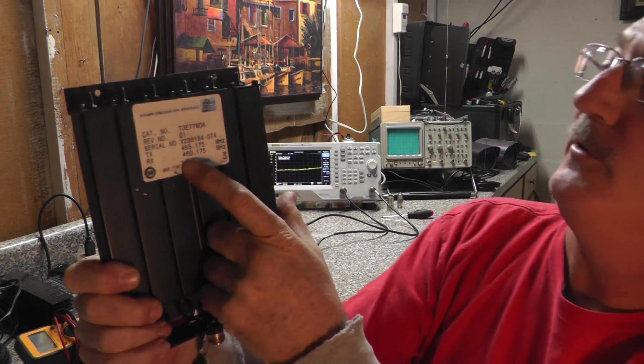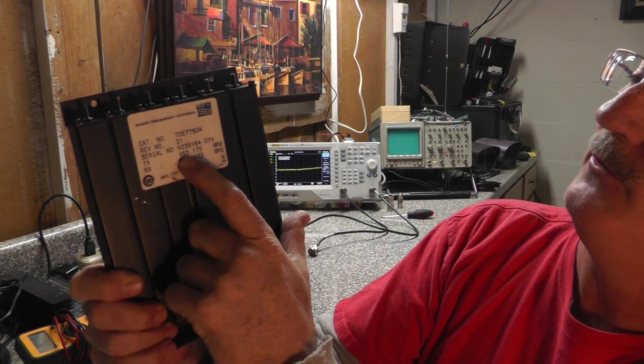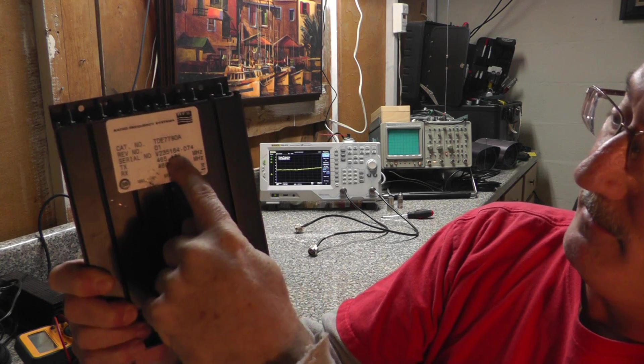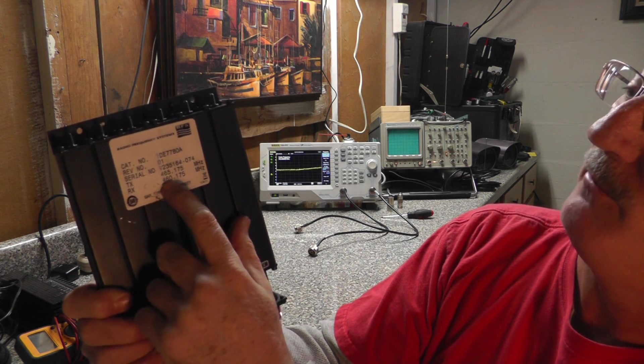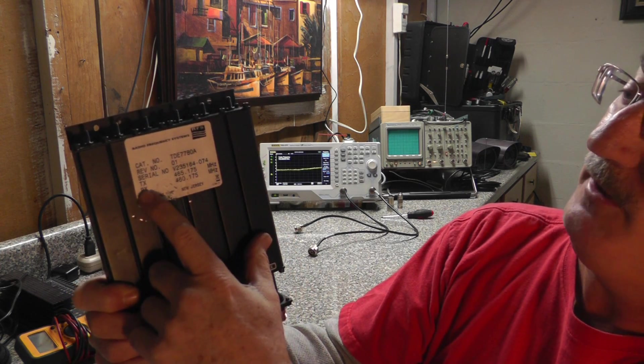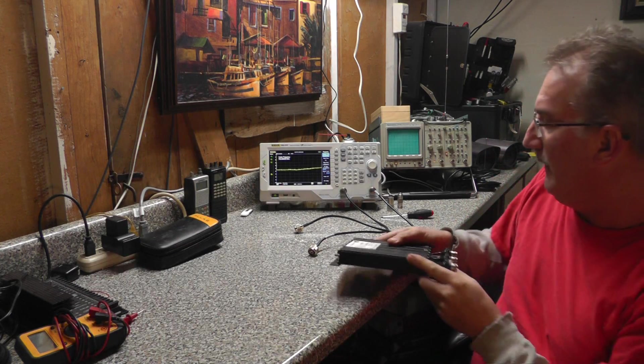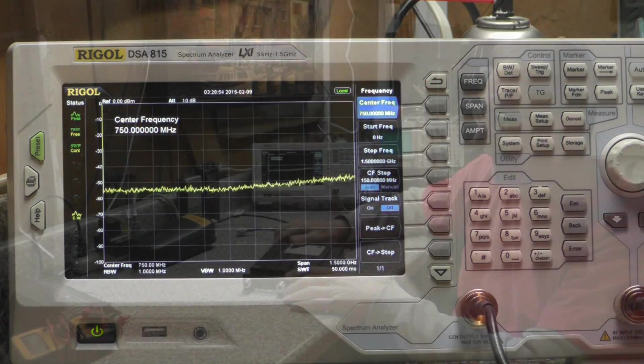As we tune this up, we're going to dial our signal generator into 465.175 megahertz and notch that transmit frequency out of our receive side. Then we'll dial up 460.175 megahertz and notch our receive frequency out of the transmit side. Hit preset here, you can see this is how the device comes when you boot it up.